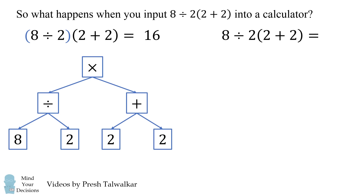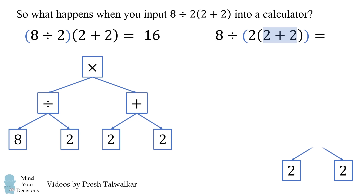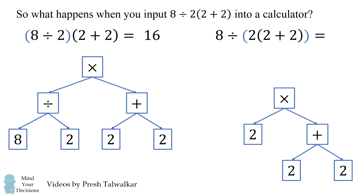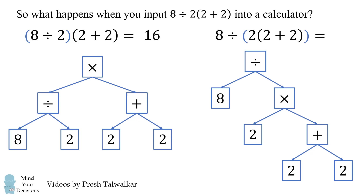But there is another way you could interpret this expression if you add a parenthesis here. This binary expression tree looks very different: at the very bottom we have 2 plus 2, then we take 2 multiplied by that result, and then 8 divided by that result. This would give the answer of 1 — but that's not how most calculators will do it.